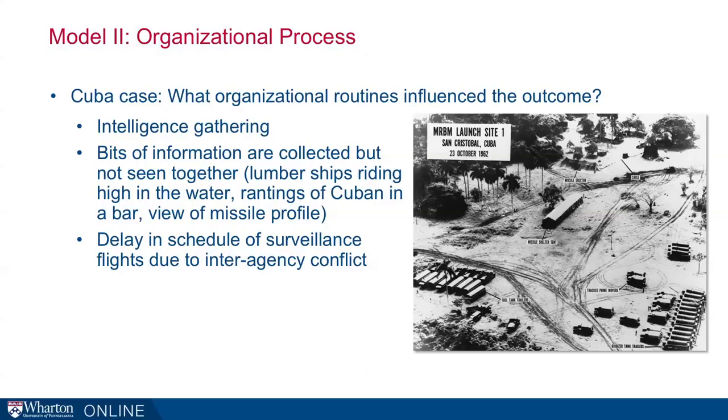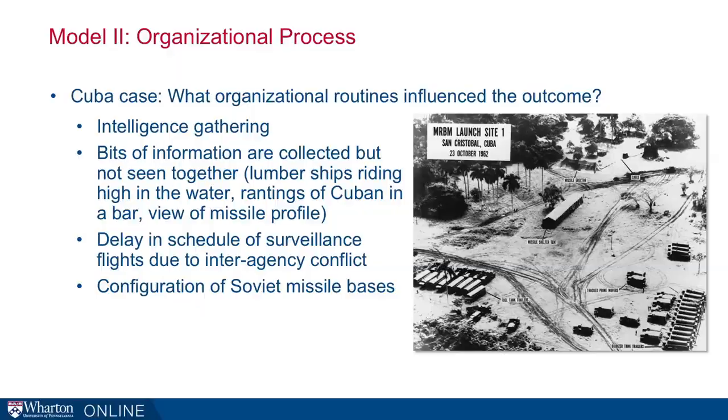There was also a delay in scheduling surveillance flights due to interagency conflict. The intelligence agencies wanted to fly the planes, but the military organizations wanted to fly them too. Until they settled that dispute, they didn't fly the planes at all, and so intelligence was gathered more slowly than it would have been otherwise.